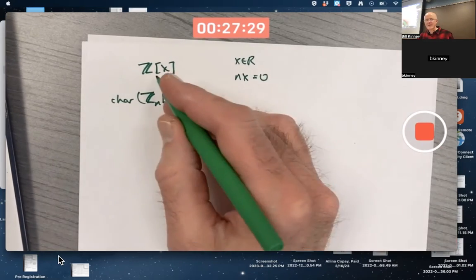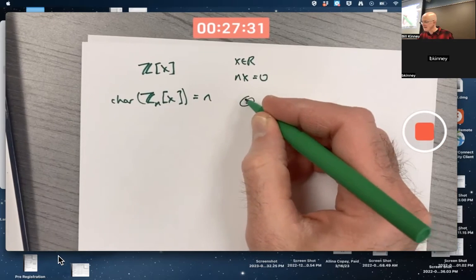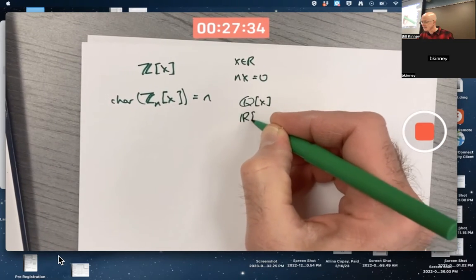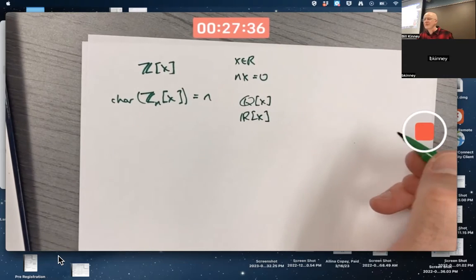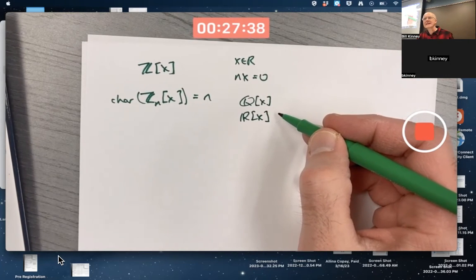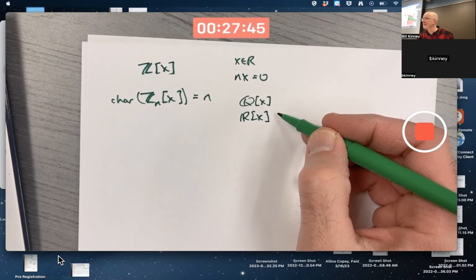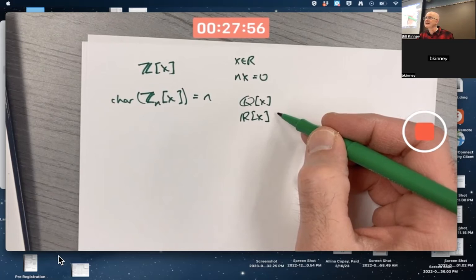And there are other ones that do as well. You could, instead of having Z, you could have Q[X] or R[X]. Those have subrings isomorphic to Z. Not ideals isomorphic to Z. Constant polynomials in these things are subrings, but not ideals because they're not super closed. Right? You multiply a constant polynomial by a non-constant polynomial, you will not get a constant polynomial. These are all good things to think about.